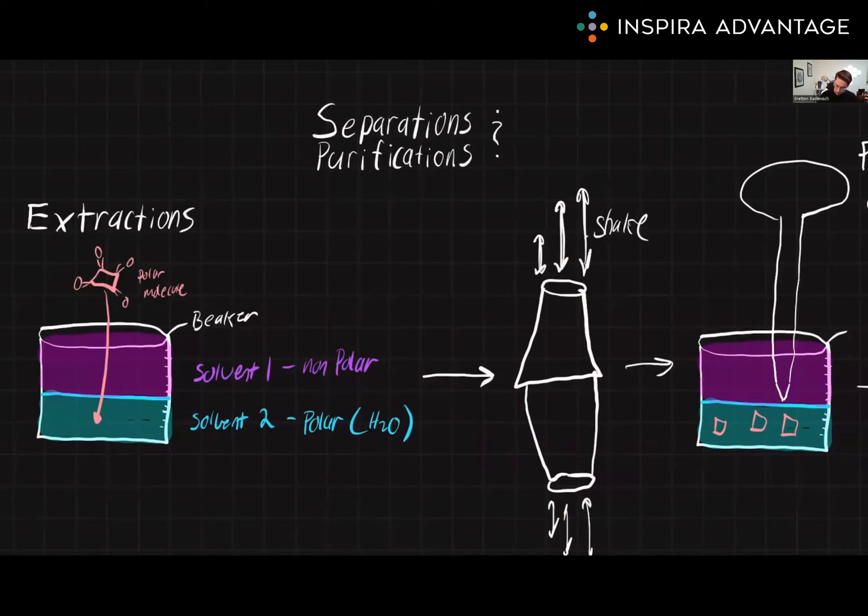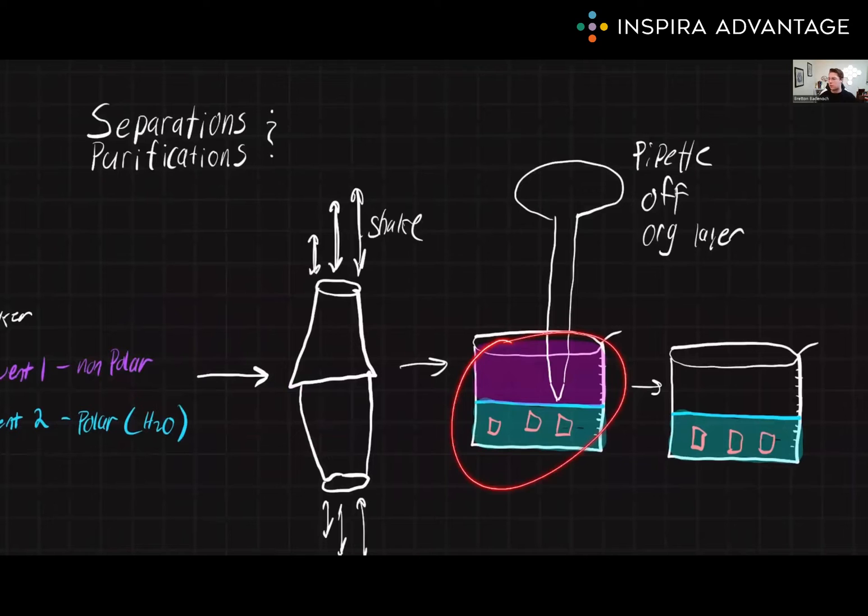After we shake it, we then let it sit and separate out. And since what we are trying to purify is polar, it's going to be in the polar or aqueous or water phase. So then we just have to suck off the phase on top, which we can do with a pipette or any other type of way. And then we're left with our target compound dissolved in water. And if we wanted to get rid of this water, we could just evaporate it off, and then we'd be left with pure solvent.